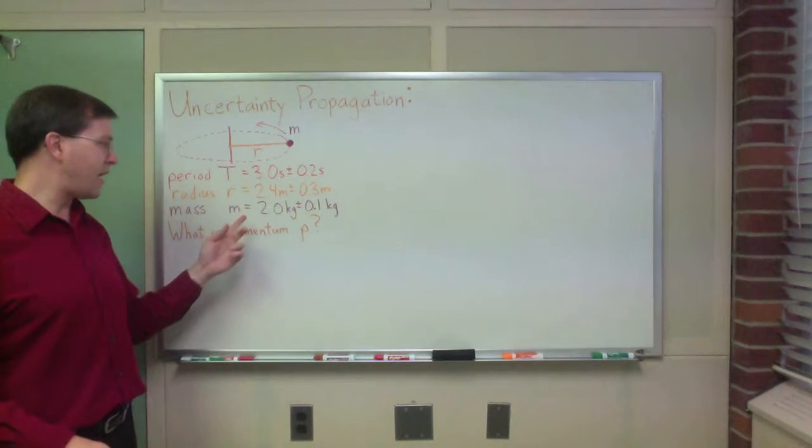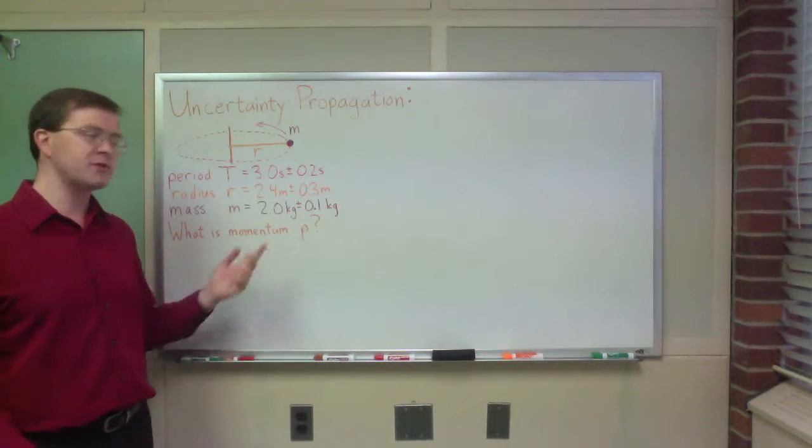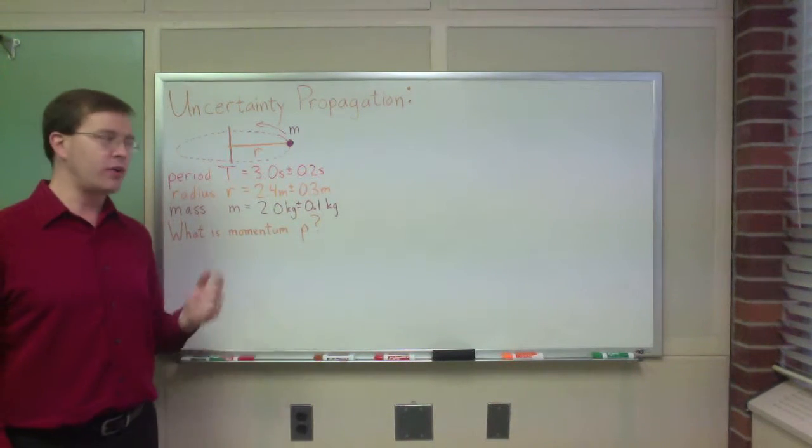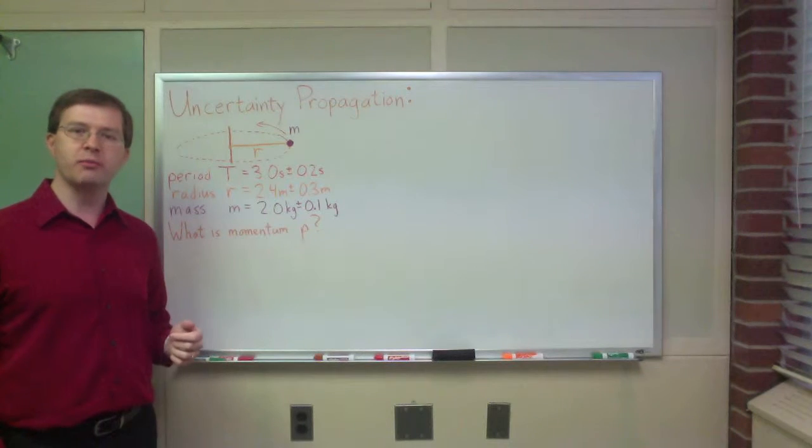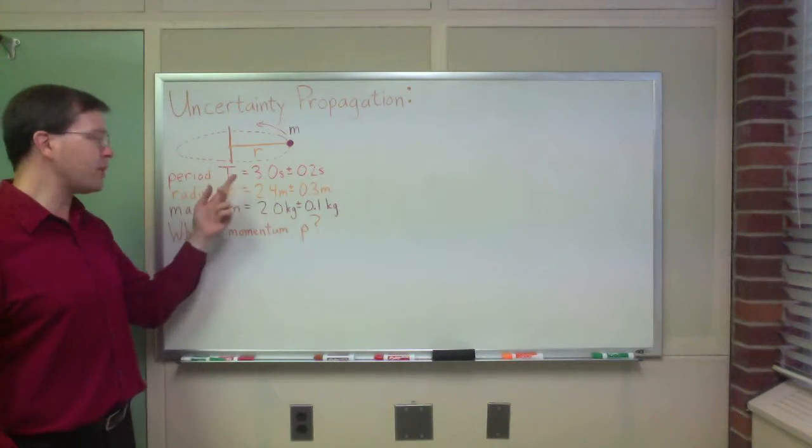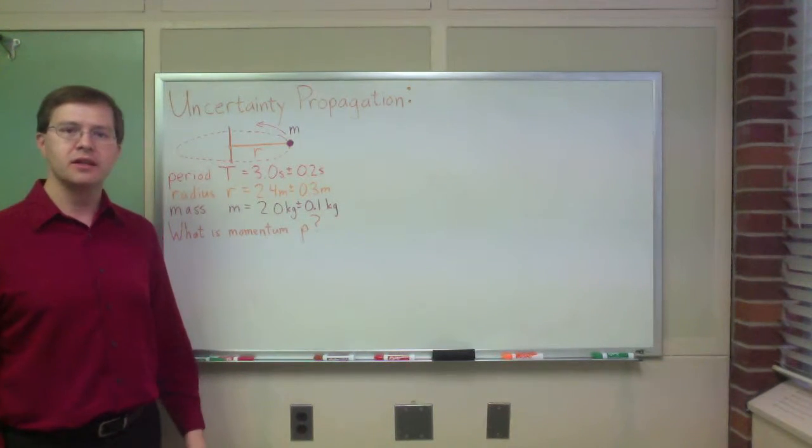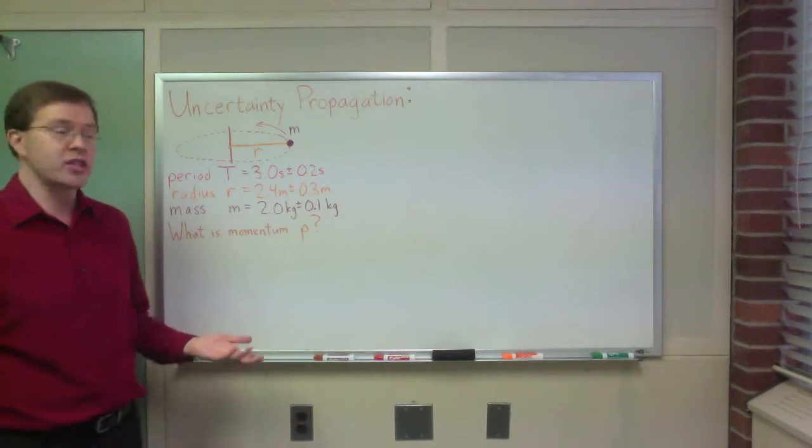The mass I've measured to have a mass of 2.0 kilograms plus or minus 0.1 kilograms. The radius of the rod is 2.4 meters plus or minus 0.3 meters. And the period for one full rotation is 3.0 seconds plus or minus 0.2 seconds. My question, my first question is, what is the linear momentum p?